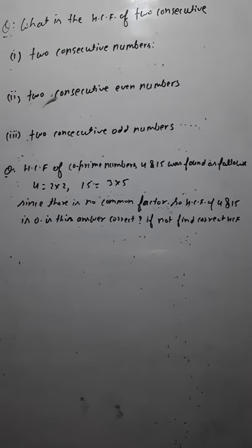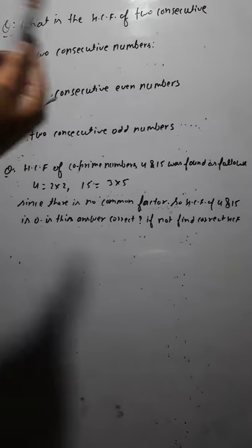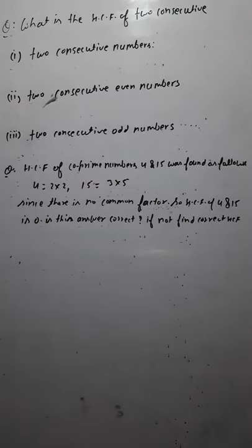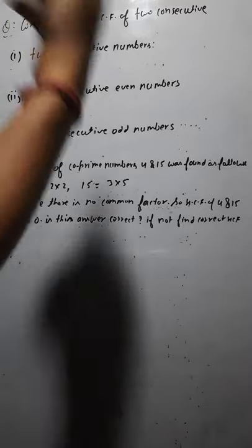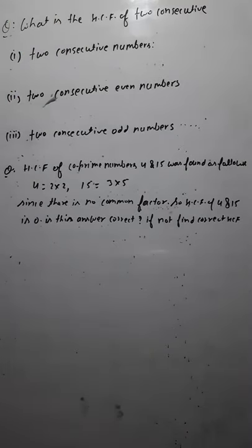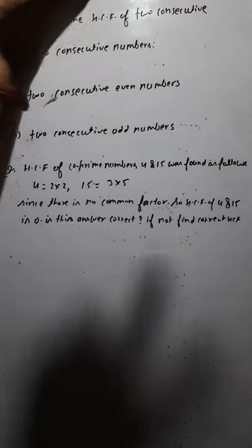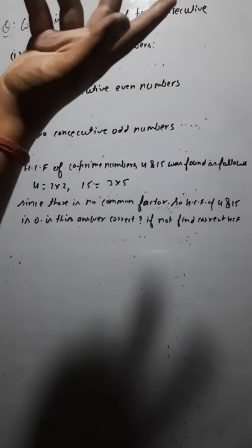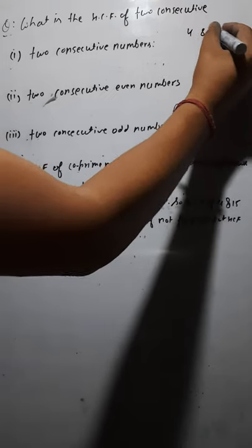If you have two consecutive numbers — numbers one after another — let's say first number is one, then second number is two. Similarly, if you take two, the next consecutive number after two is three. So this is how you take any two consecutive numbers at random. What would be the HCF of those two consecutive numbers? Let's take four and five.